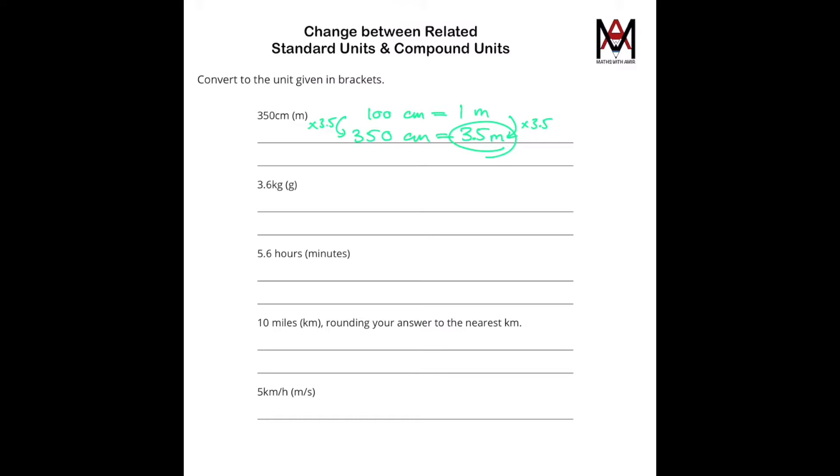Then in the second one, we know that 1 kilogram equals 1,000 grams. So 3.6 kilograms, that's times by 3.6. So we need to times 1,000 by 3.6. So let's do that. And that's this decimal point moving to the right three spaces, which makes this number to be 3,600. And that's 3,600 grams.